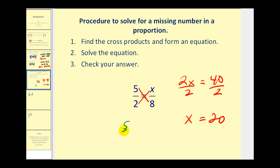To check this, we'd have 5 is to 2 as 20 is to 8. 5 times 8 is 40. 2 times 20 is also 40, so it checks.